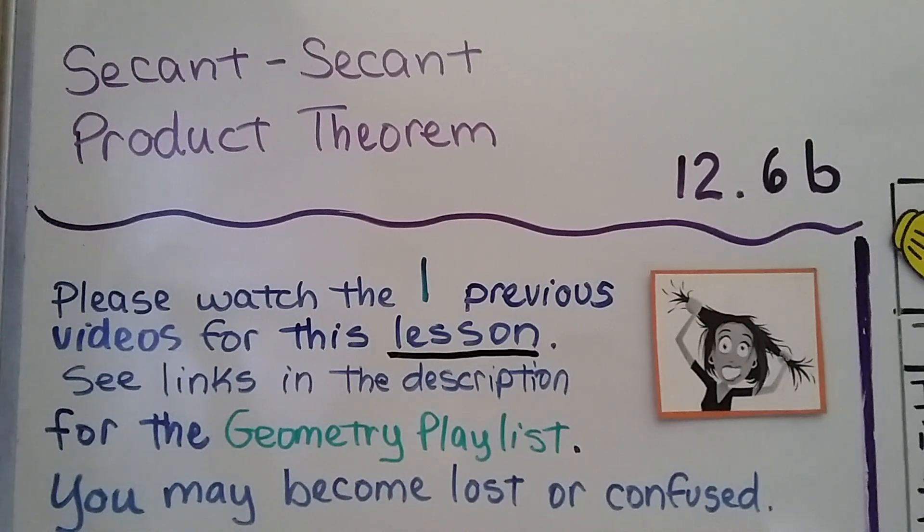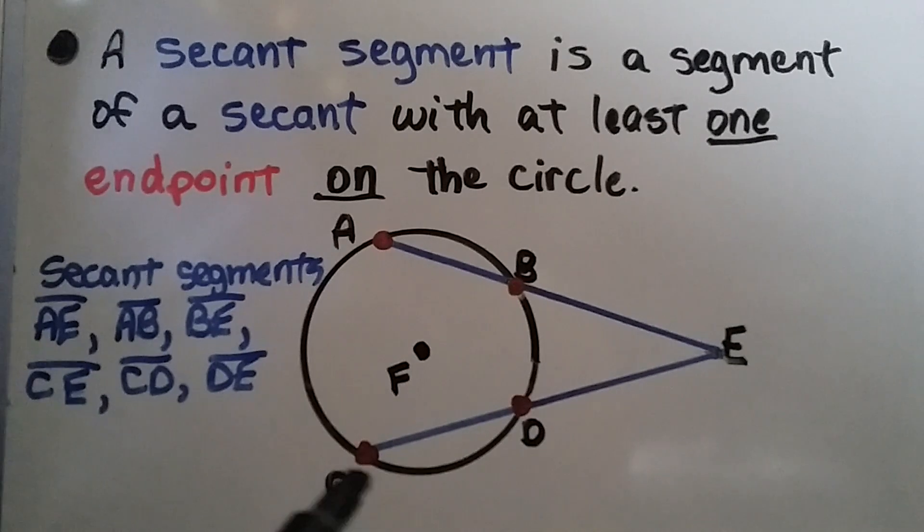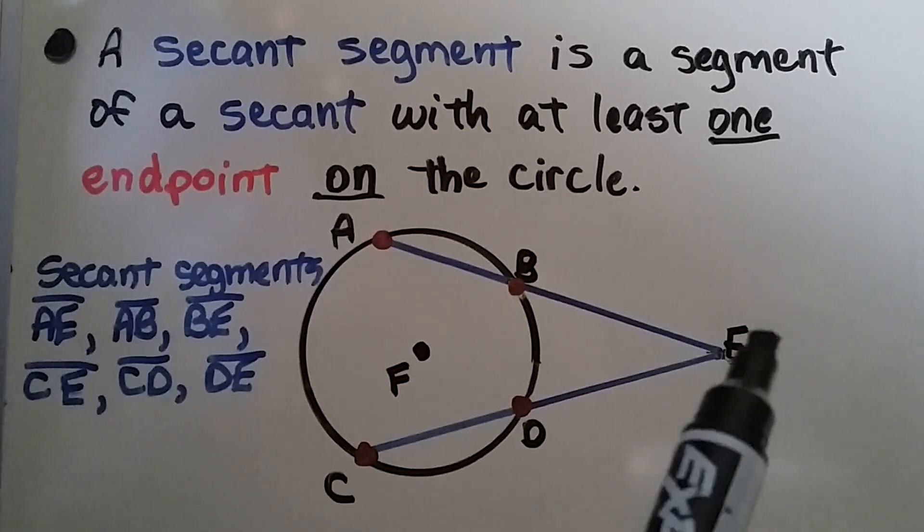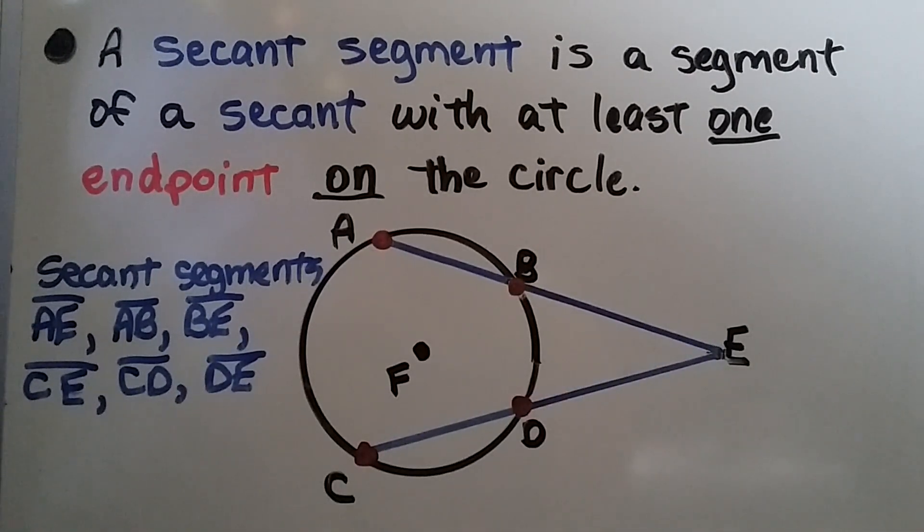We had learned about the chord-chord product theorem. A secant segment is a segment of a secant with at least one endpoint on the circle. See these endpoints? We have several secant segments here: the entire thing AE, also AB, BE, this entire thing CE, and CD and DE.